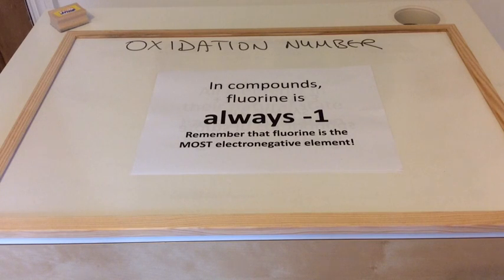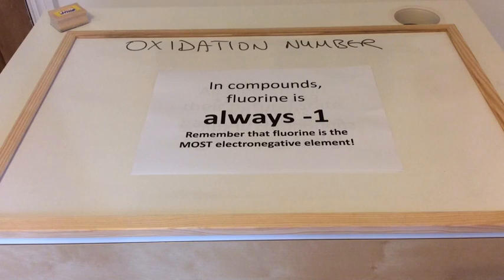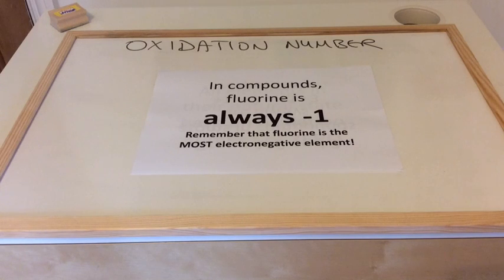There's a rule for fluorine. In compounds, fluorine atoms always have an oxidation number of minus one. Fluorine is in group seven, so it always requires one electron to complete its outer shell — that explains the one. It's always negative because fluorine is the most electronegative element, so it will always be minus one.